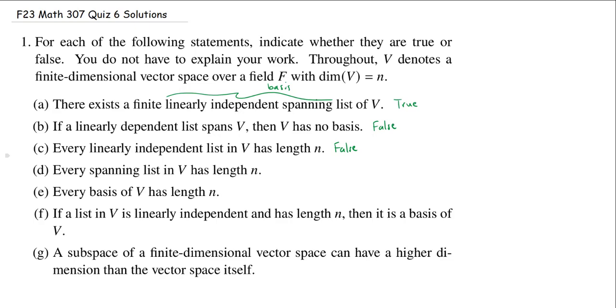Part D: every spanning list in V has length N. This is just as bad as the previous one. If you have a spanning list, we know it has to be at least as long as a basis. So the length must be at least N. But of course, you can just keep on adding more vectors to it. It's going to keep spanning. So you can have spanning lists much larger than N. This statement is also false.